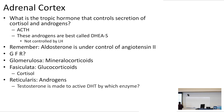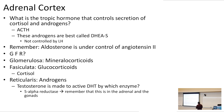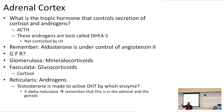Testosterone is made to active DHT by which enzyme? Testosterone to active DHT is going to be by 5-alpha reductase. Remember, this is in the adrenal and in the gonads. This 5-alpha reductase takes testosterone and makes it into dihydrotestosterone. There's a good pharmacology tie-in because we have a 5-alpha reductase inhibitor — finasteride. Finasteride blocks the finishing step in testosterone synthesis: testosterone to DHT.